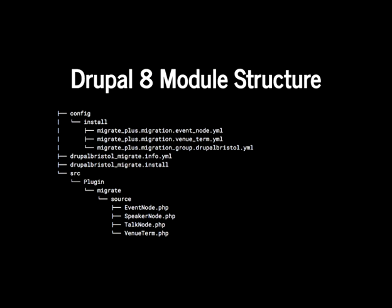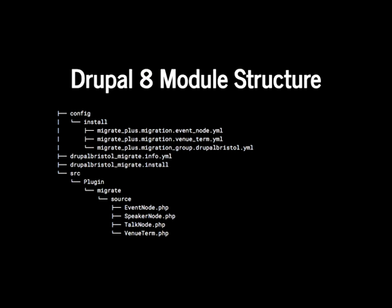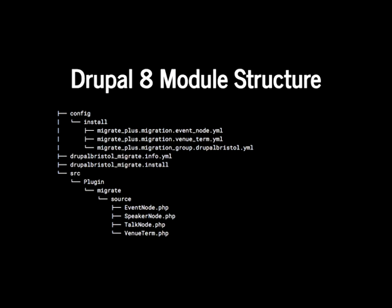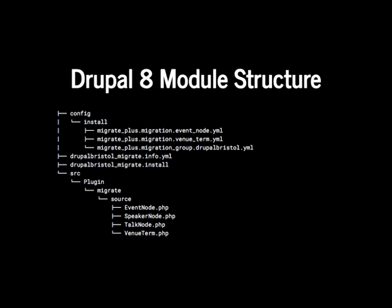The structure of the module includes an info.yaml file — in Drupal 8, .info files became info.yaml files. There's no .module file because it's optional in D8. There's an install file. Within the config/install directory are custom migration plugins that get run when the module is installed, and within the install file we have the uninstallers for them. Within our src directory is where the PHP code lives — there are four different source plugin classes, one each for events, speakers, venues, and talks.